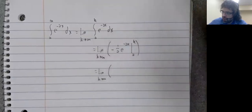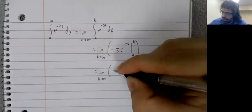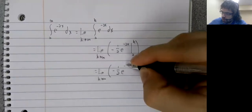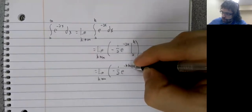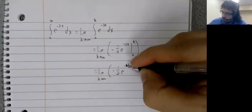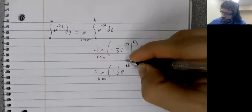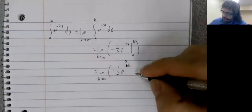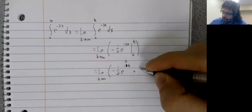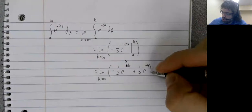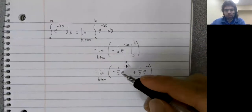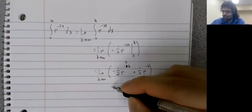So plug in k. Plug in 2 minus a negative plus 1-half e to the negative 4th. This goes to zero.